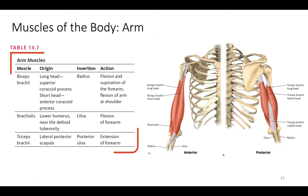Traveling down the arm: the biceps brachii has two points of origin on the coracoid process of the scapula — the superior and anterior coracoid processes — inserting at the radius. This allows flexion of the forearm and supination, turning the forearm upward. The brachialis originates at the lower humerus near the deltoid tuberosity and inserts at the ulna to flex the forearm. The triceps brachii extends the forearm, found at the posterior scapula and connected to the posterior ulna.